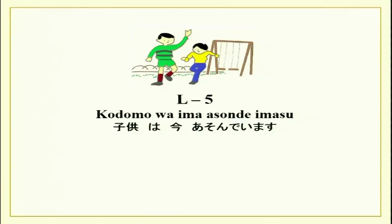Last week we did adjectives and the various conjugation forms of adjectives. We also did the tai form of the verb — as you know, tai form says 'I want to do' whatever the verb is saying. Today we are going to do the te form of the verb, which is equivalent to the -ing or continuous tense in English. Now there are two types of verbs: action verbs and non-action verbs.